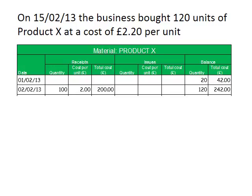Next, we buy another 120 units of Product X, this time at a cost of £2.20 per unit. We record the date, the quantity bought, the cost per unit, and calculate the total cost. We then recalculate the balance of Product X at the end of that transaction — we now have 240 units and they've cost overall £506.